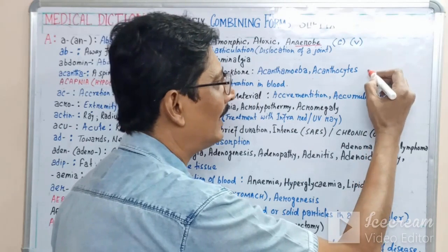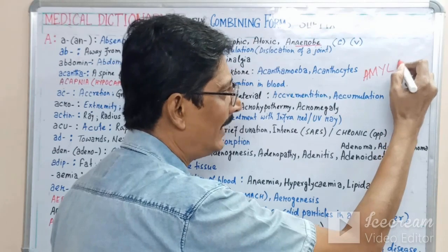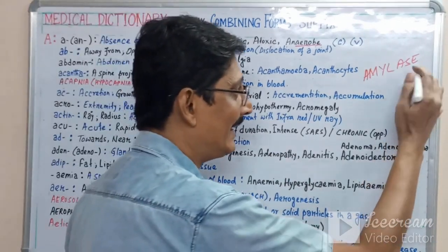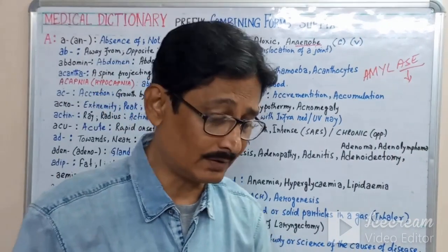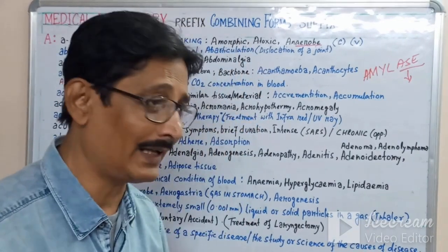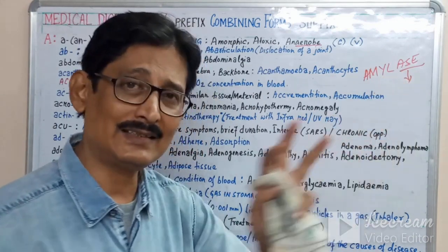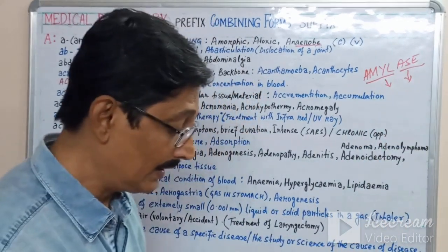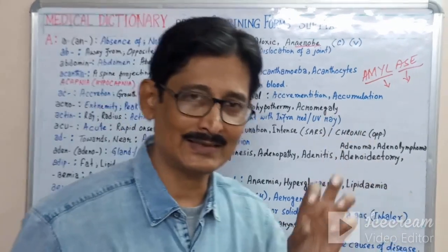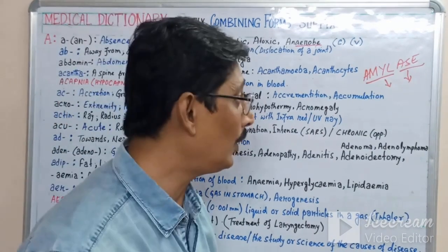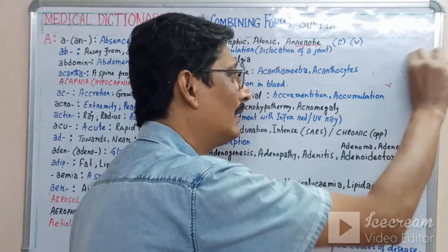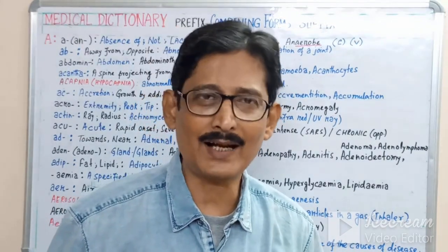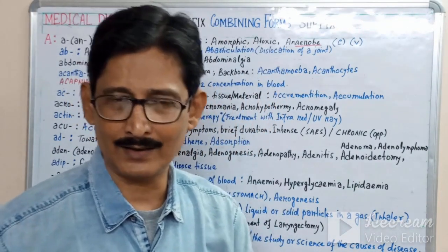Let's take an example: the word 'amylase.' Amylase is an enzyme — all of you know that. The suffix '-ase' means a breaking agent, so it is an enzyme that breaks a substrate. 'Amyl' means starch. So you can easily recall that amylase is an enzyme which breaks down starch materials. If anybody asks you the function of amylase, you can recall: 'amyl' stands for starch, '-ase' for breaking agent — so amylase is an enzyme that breaks starch.